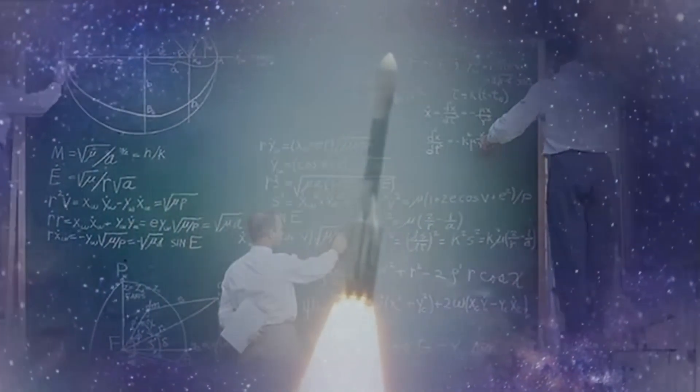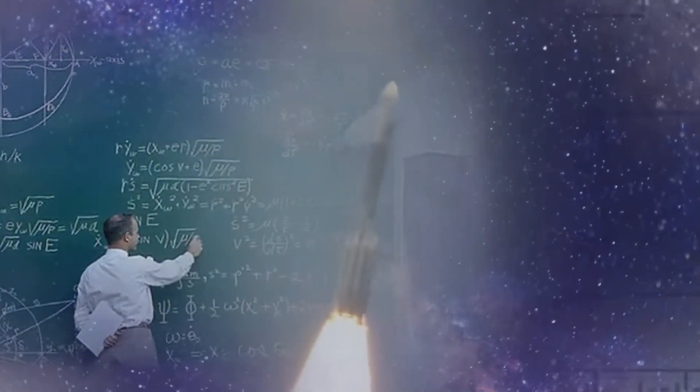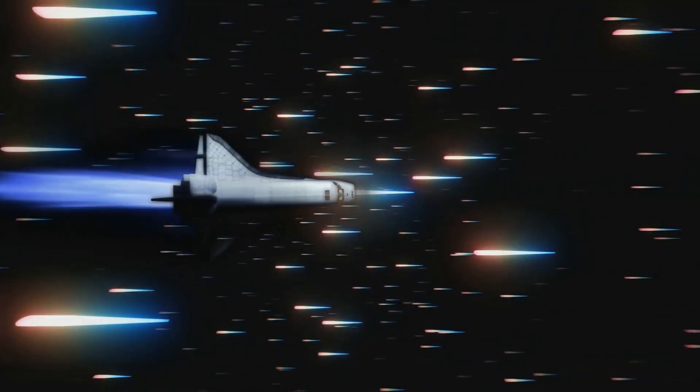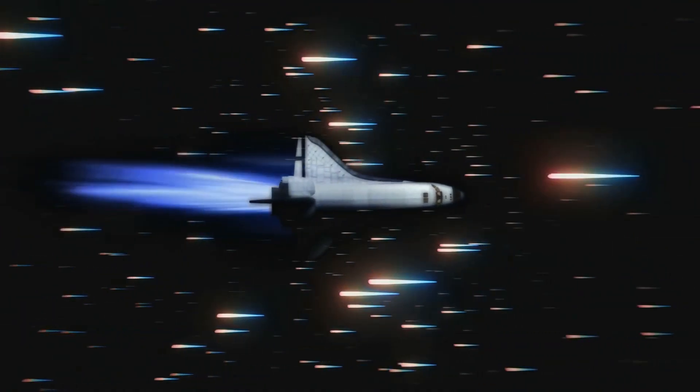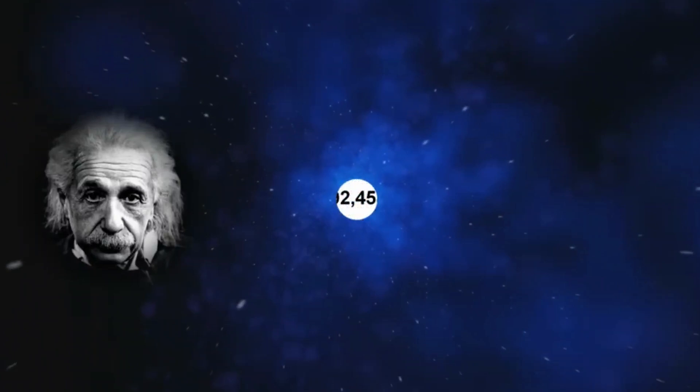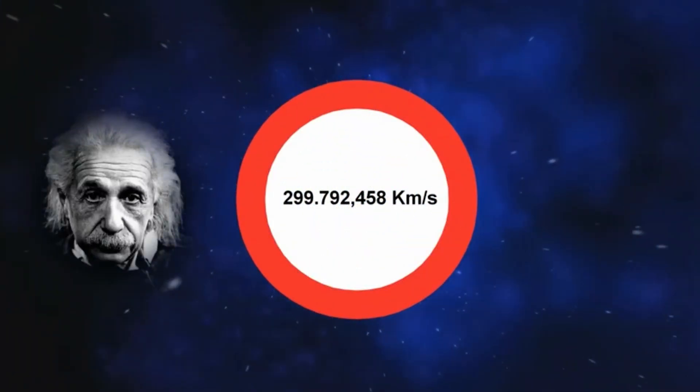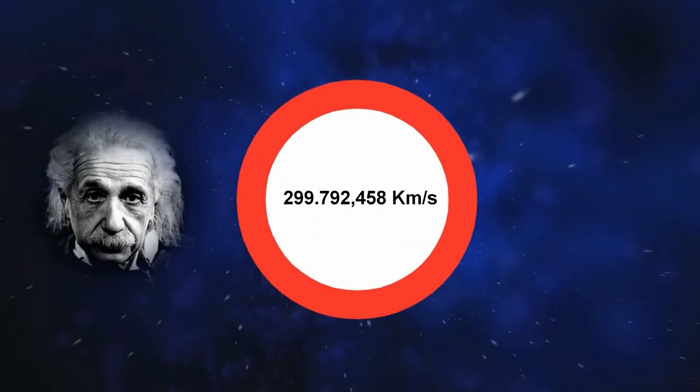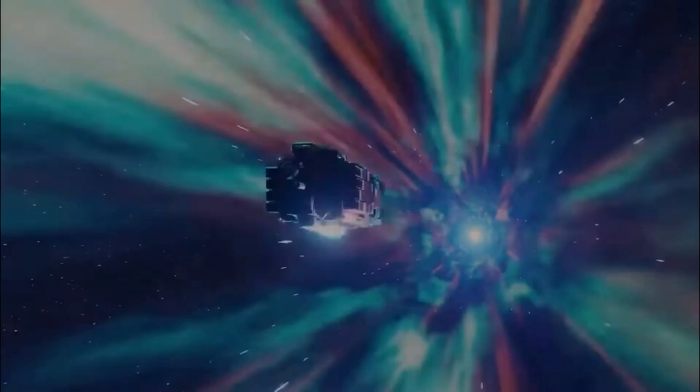In our quest to conquer the cosmos, the speed of light remains an intriguing but elusive concept. The speed of light, constant at 299,792 km per second, is the speed limit of the universe according to Einstein's theory of relativity. It is a towering wall that defies our ambitions of interstellar exploration.